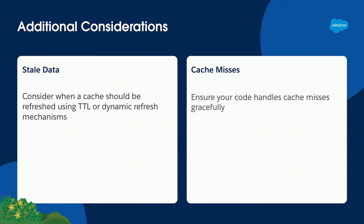Some additional considerations: think about when refreshing data — what type is it and how stale can it be? Consider using time to live for the cache or dynamic refresh options. Programmatically, you can use a trigger to say something changed and go purge that specific record from the cache. There's a lot of functionality available for dynamically handling that.